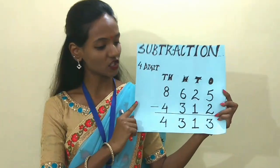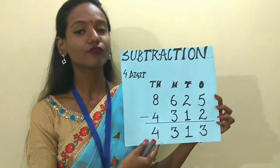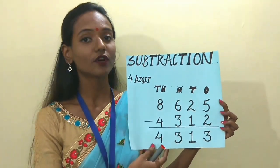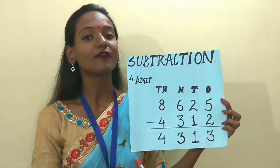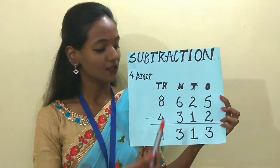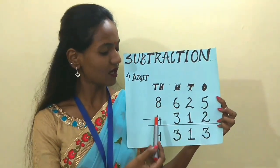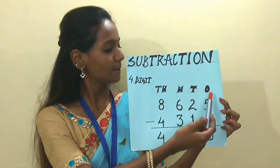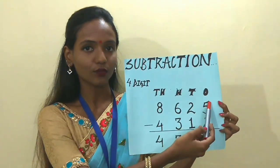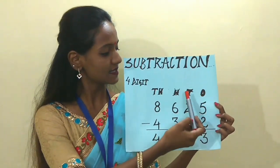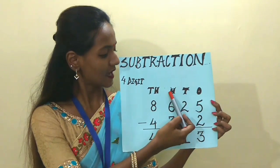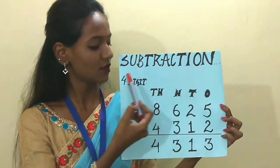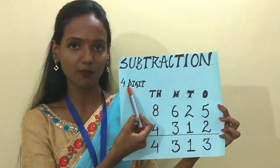Let's see children, here is a number for you to subtract. First, what do we have to do? We have to arrange the first number and the second number according to their place value. You know the place value — 1s, 10s, 100s, and 1000s — because we are dealing with a 4-digit number.